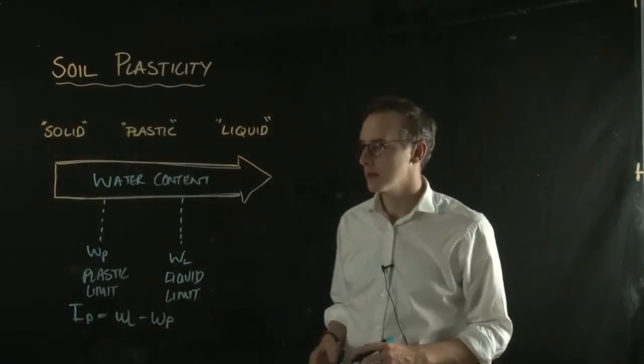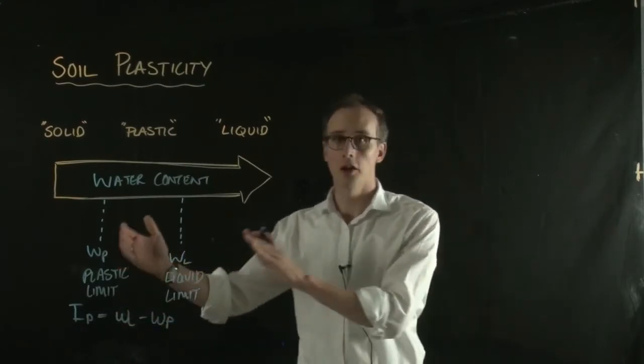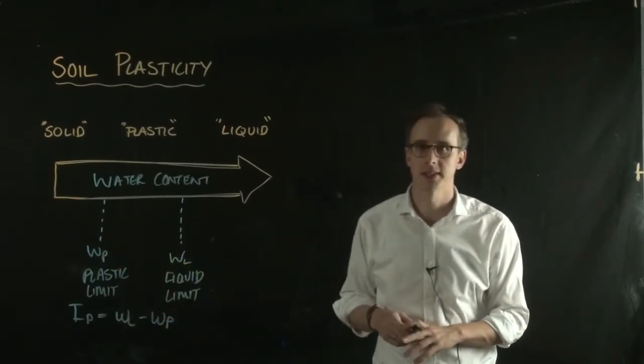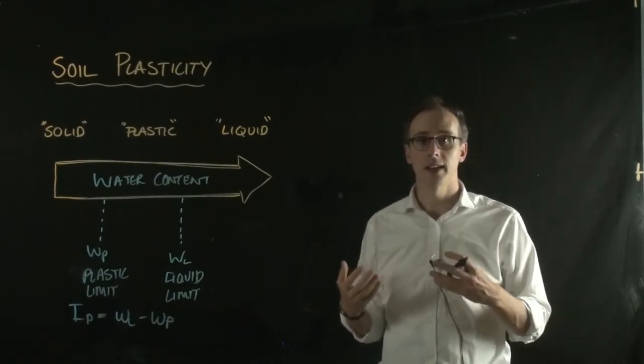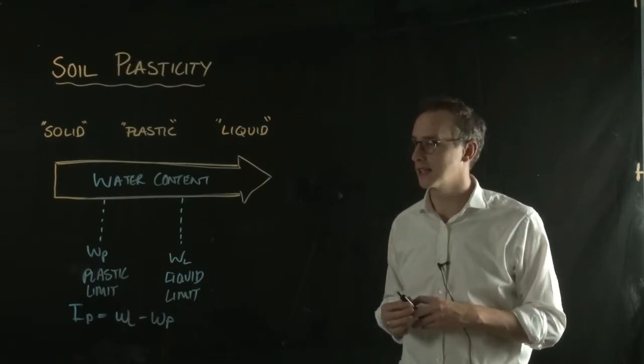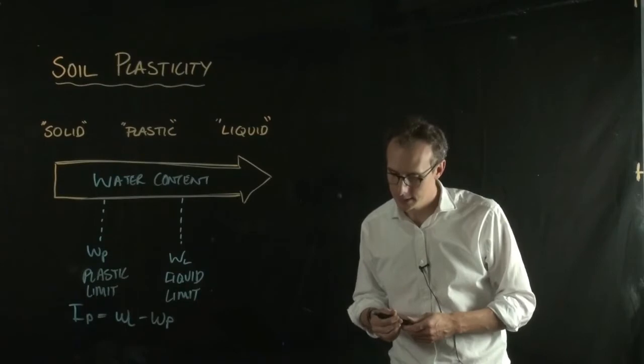So we can see that soils with a higher plasticity index will have a much larger range that they exhibit this plastic behavior. So things like a kaolinite will have a lower plasticity index than a montmorillonite or a bentonite type clay.